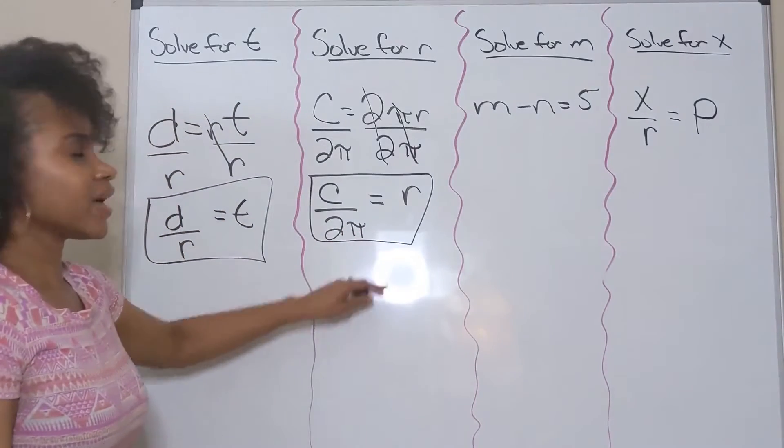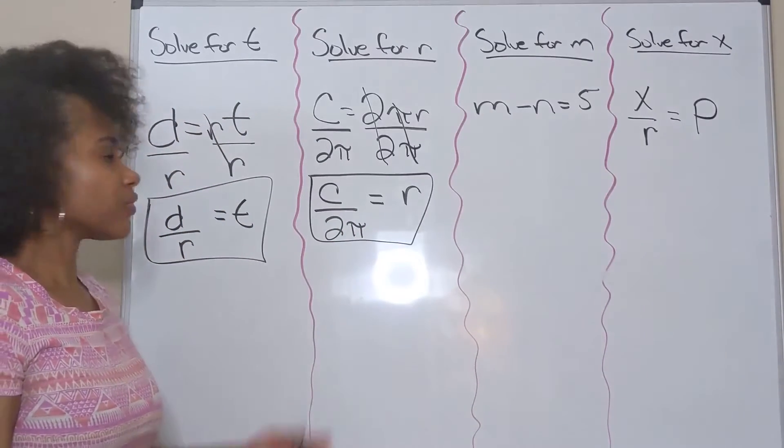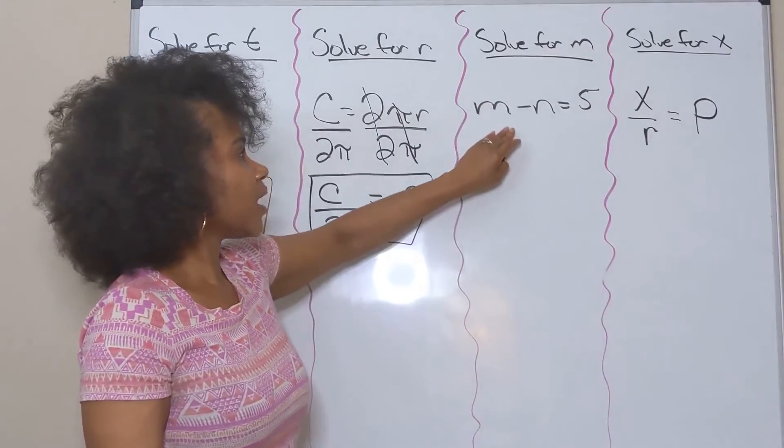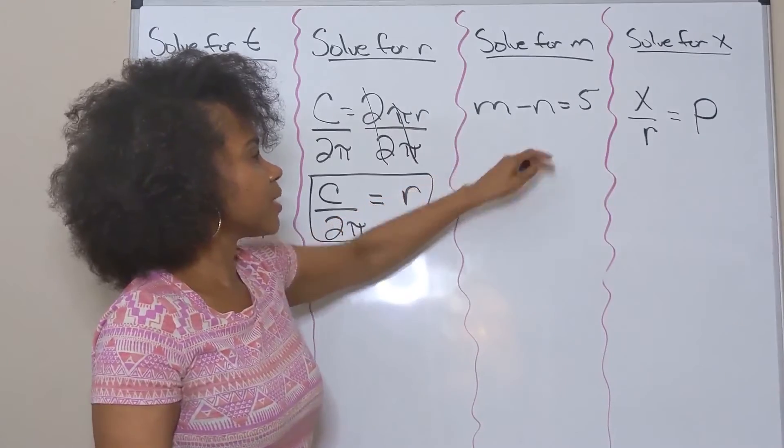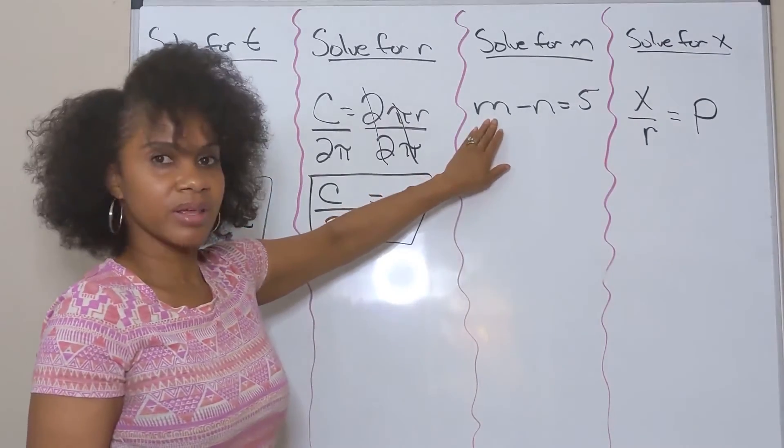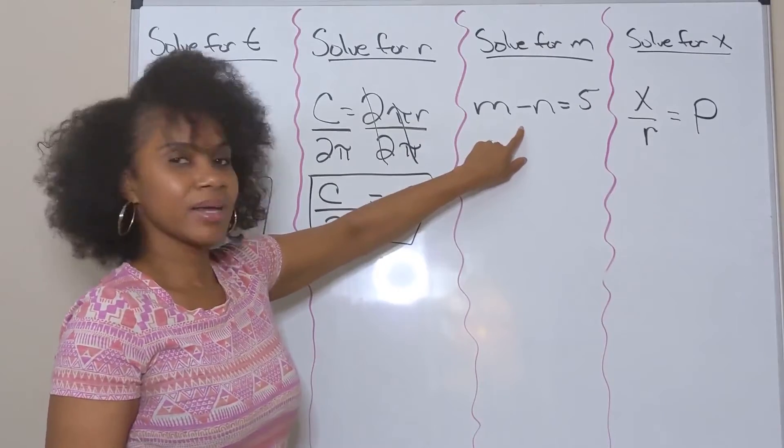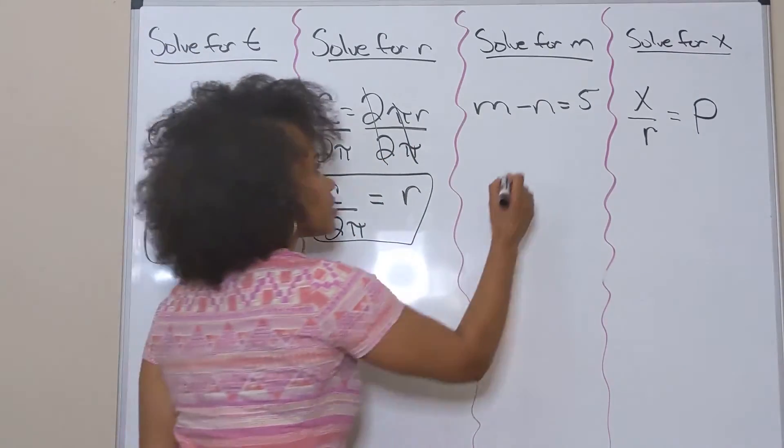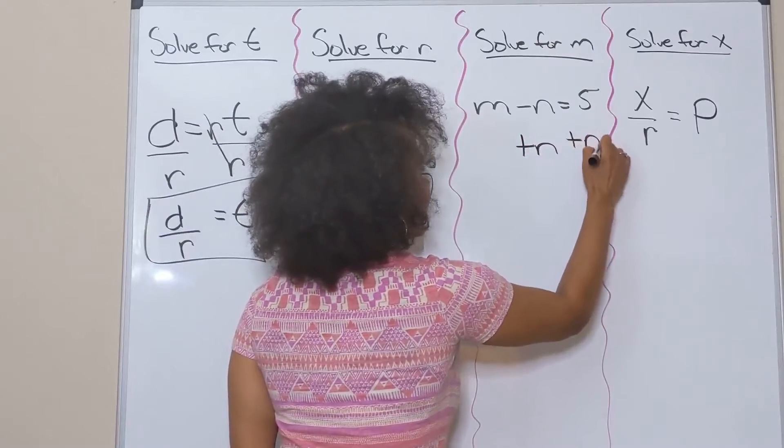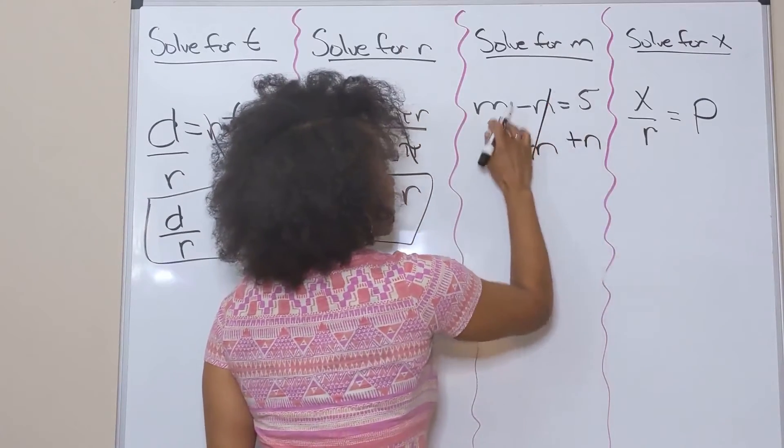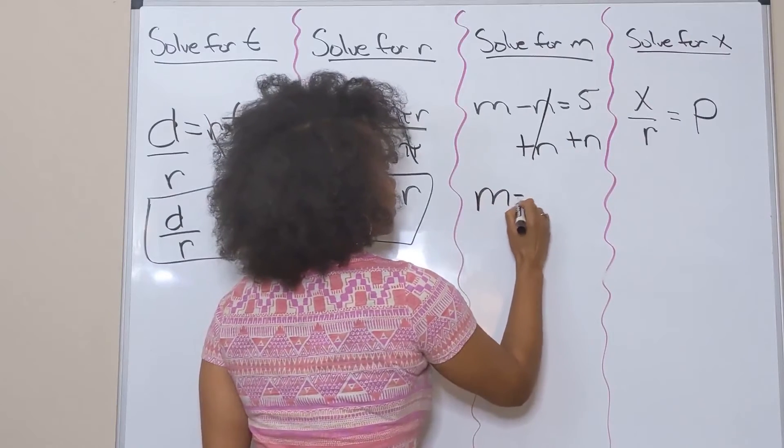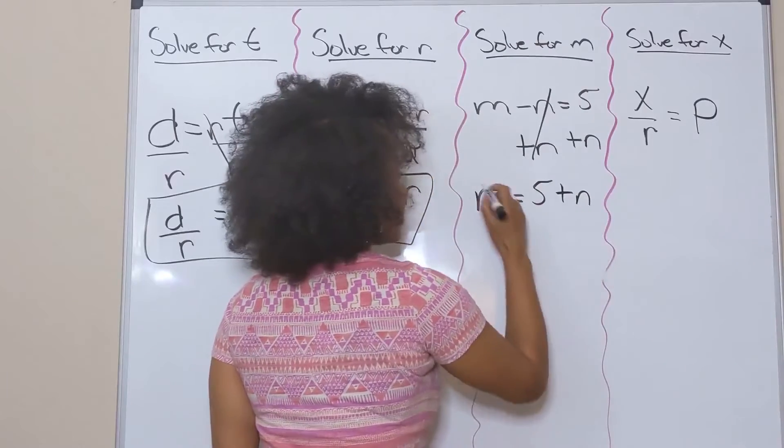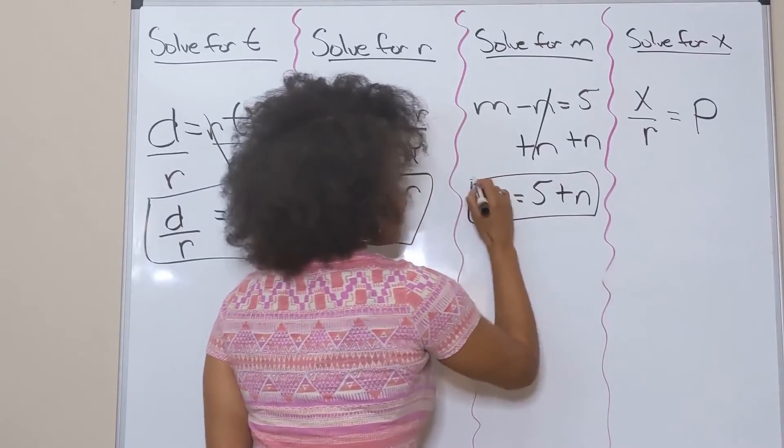Here we want to solve for m. I have m=n-5. My goal is to isolate the m. Since this is minus n, the inverse of subtraction is addition. I'm simply going to add n to both sides, bring down my m, and I'm left with n+5. That is my answer. I leave it like this because I cannot combine anything else—I don't have any like terms.